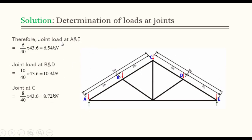Therefore, joint load at A and E is equal to 6 divided by 40 times 43.6, which is equal to 6.54 kilonewtons. The 6 is the loaded area supported at joint A divided by the total loaded area supported by the truss and multiplied by the total load supported by the truss, which gives us 6.54 kilonewtons. Similarly, joint load at B and D is equal to 10 divided by 40 times 43.6, which gives us 10.9 kilonewtons. And then at joint C, we have 8 divided by 40 times 43.6, which gives us 8.72 kilonewtons.